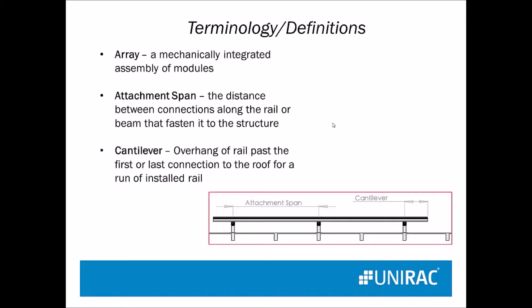The attachment span is the distance between the connections — the distance between the L-feet that you are attaching to the ground or the roof or whatever you're putting your solar modules onto. And the cantilever is the overhang at the end past the last attachment.